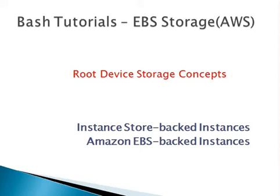Now moving to the second part — what are our EBS storage types. There are two types of storage device concepts: Instance Store-backed instances and Amazon EBS-backed instances. When creating an instance, it will ask which type of storage you require. With Instance Store, your whole data and boot volume are stored on the local storage device on the OS, mainly on SDA, and whenever you terminate your instance all your data is lost.